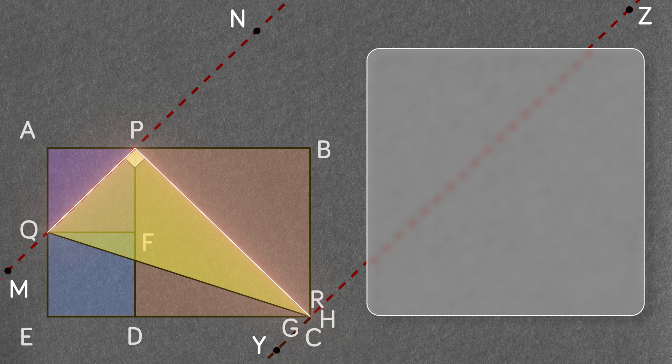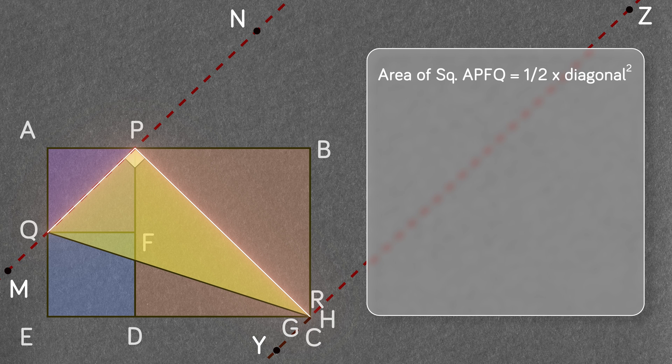Now let's try and find out PQ and PR for the actual numerical value of area of the triangle PQR. To find out PQ, let's look at the square APFQ. Because the area of the square is given by half diagonal square, here half times diagonal PQ square will be equal to 8 or diagonal PQ will be equal to 4 units.